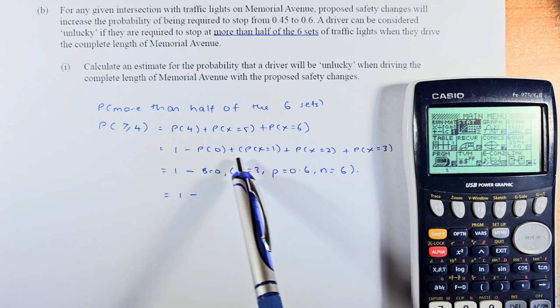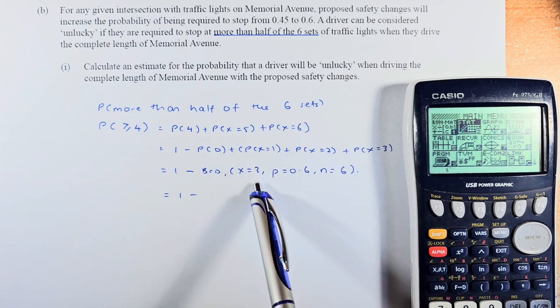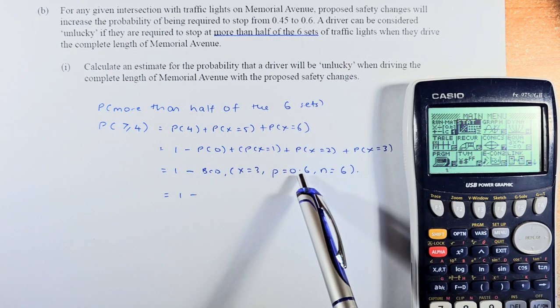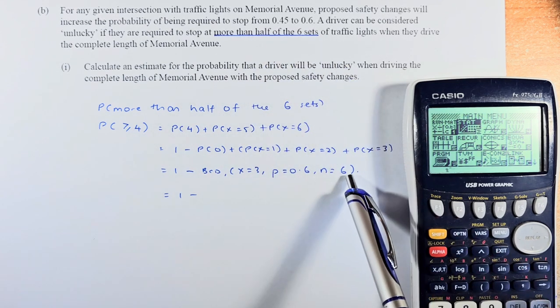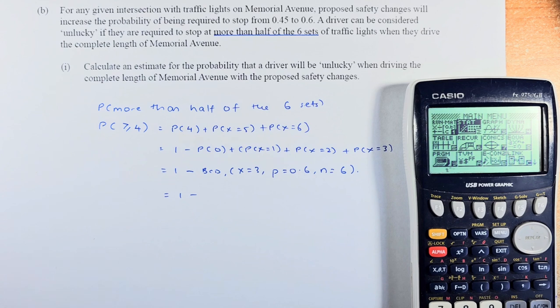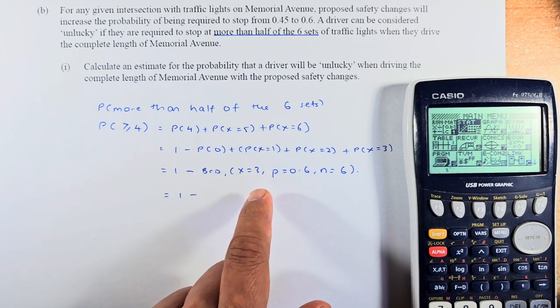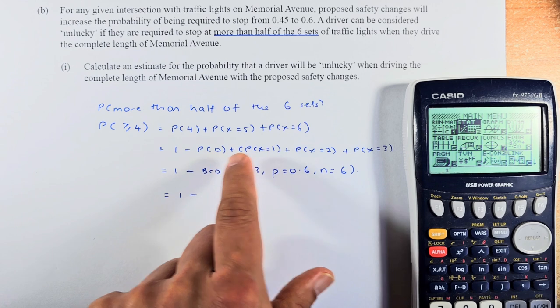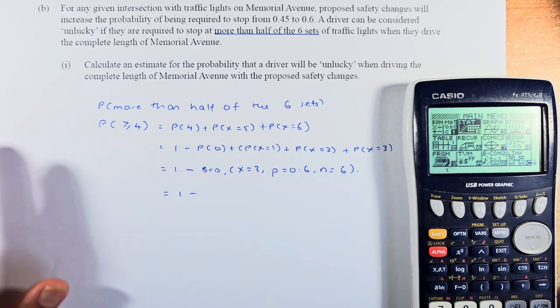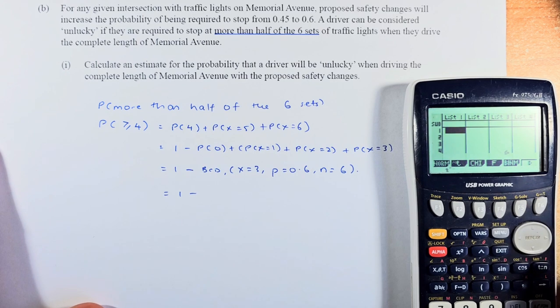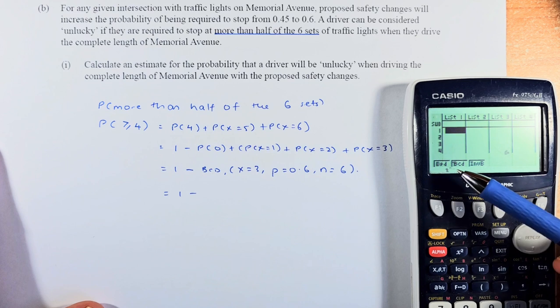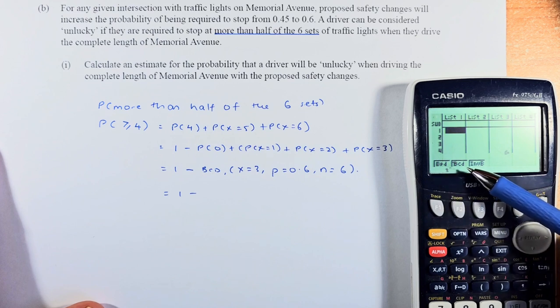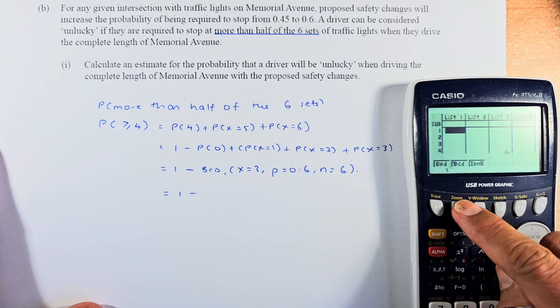Of x equal to 3, because it starts from 0 to 3. The probability has increased from 0.45 to 0.6, and the number of trials or number of traffic lights is still going to be 6. We are going to do this BCD from 0 to 3, and we're going to take 1 minus that probability. Go to statistics, distribution F5, binomial F5 again. This time you do not do BPD, you have to do BCD because it's cumulative. Press F2.